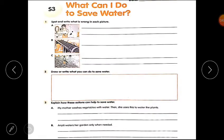Now please open your worksheet S3, what can I do to save water? First question is, spot and write what is wrong in each picture. The boy is brushing his teeth and the tap is open. The tap is on, so the water is being wasted. Next picture, you can see a pipe that is leaking, so the water is being wasted. Last one, the farmer is using the old method to water the fields. He can use new method like drip irrigation to save the water.